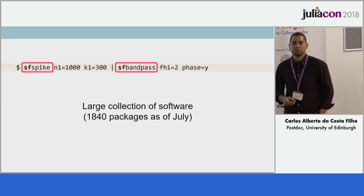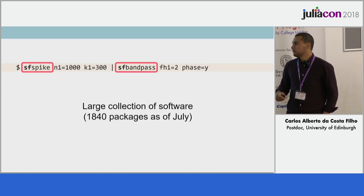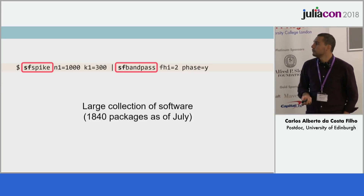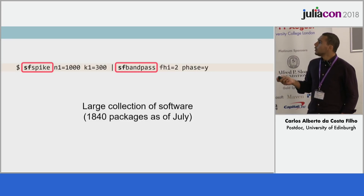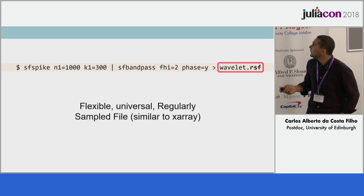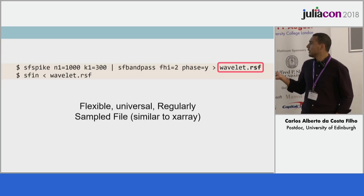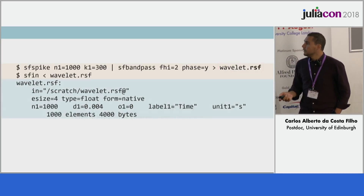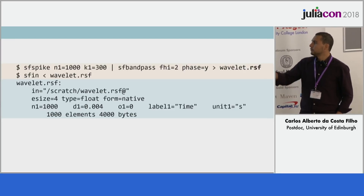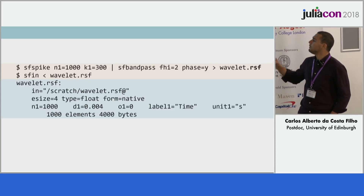Madagascar is really a collection of many different programs to do a lot of different things. The focus is obviously geophysics, but there's a lot that can be used in other areas — image processing, physics-based modeling, and more. As of last month, there are 1,840 programs and it keeps growing. These programs communicate through files, specifically a file format called RSF, which stands for Regularly Sampled File. It's very similar to xarray — each dimension has a number of samples, a spacing, an origin, and metadata like label and unit.